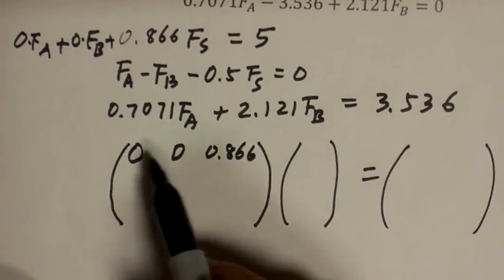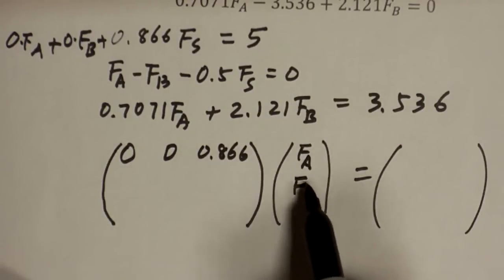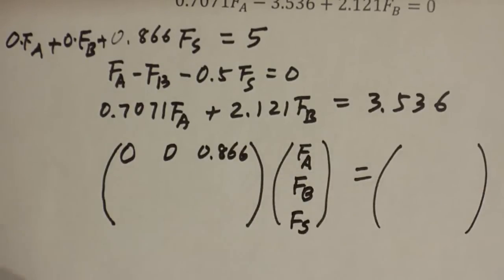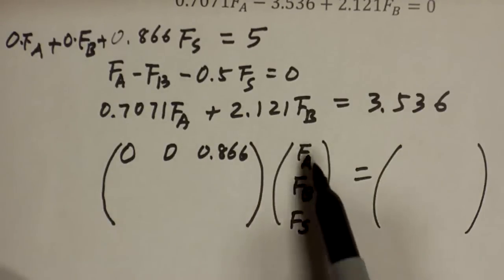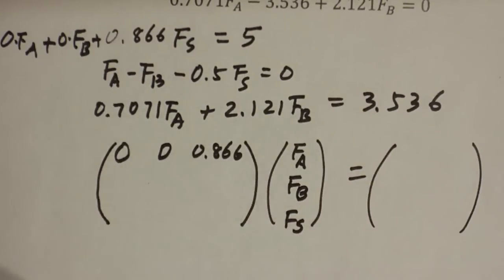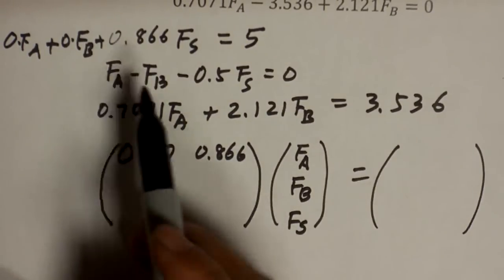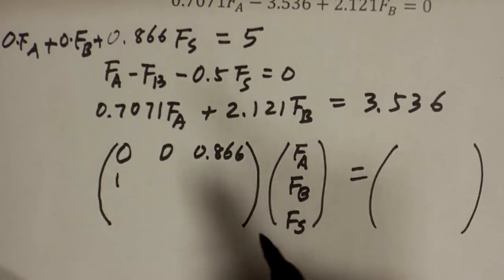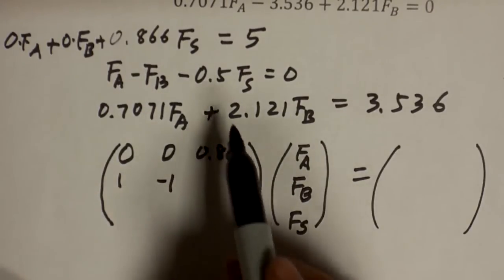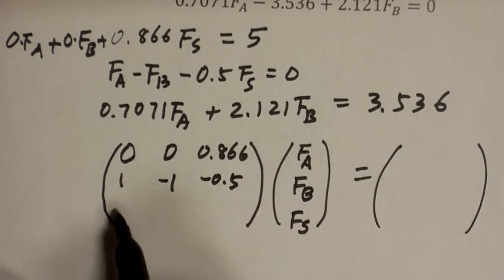That's because this is the coefficient for Fa, this is the coefficient for Fb, this is the coefficient for Fs. Now, if you were to switch these around, let's say Fs comes first, then this coefficient also has to switch around so they correspond. Here, this is 1 times Fa, so the coefficient is 1. That's negative 1 times Fb, so the coefficient is negative 1. This is negative 0.5 Fs, so that's what you have.